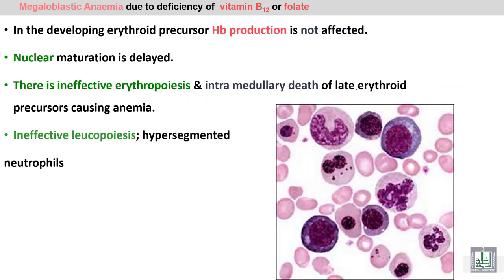In the developing red blood cells — the immature red blood cells — there is a defect in nuclear maturation while the cytoplasm remains normal, so hemoglobin production in the cytoplasm is normal. However, these abnormal red blood cells lead to ineffective erythropoiesis, causing intramedullary destruction or intramedullary death of the late erythroid precursors, resulting in anemia.